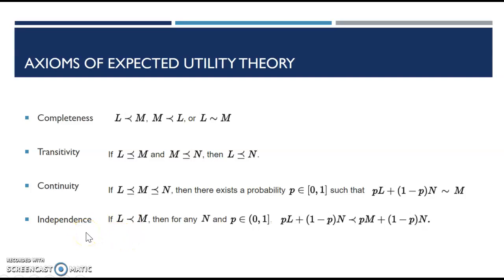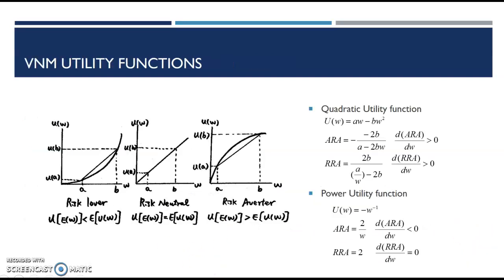They must also be independent. So if L is less than M, then for any N, I must be able to come up with this situation. I'm seeing that M is between L and N. You must still be able to define that you like N more than you like L. That's what that independence is showing there.